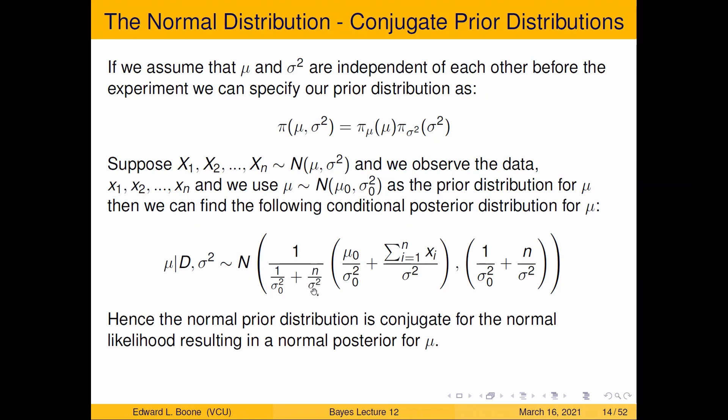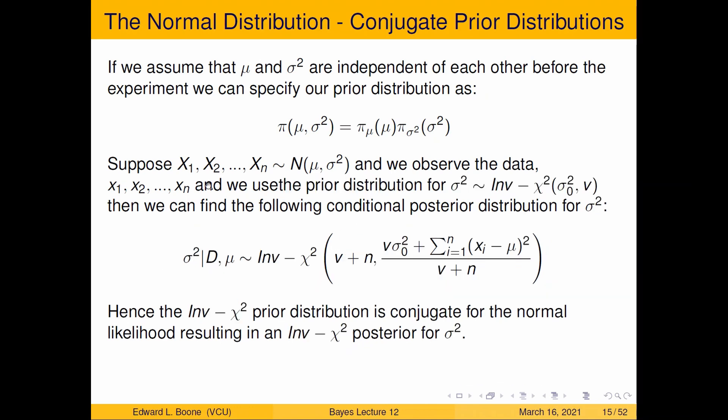But let's not, or s over the square root of n, I'm sorry, piece hanging out here. And so let's move on to our other parameter we have to worry about. Okay. So under the same situation, if we use the prior distribution, sigma squared follows an inverse chi-squared distribution with sigma squared scale and v degrees of freedom, then we can use this to find the following conditional posterior distribution for sigma squared. And I say it's conditional because in this one we have to know the mean. Okay. So sigma squared, given the data and the mean follows an inverse chi-squared with v plus n degrees of freedom.